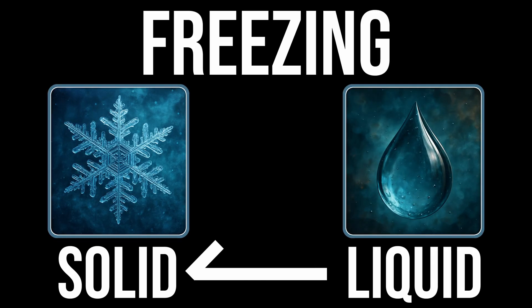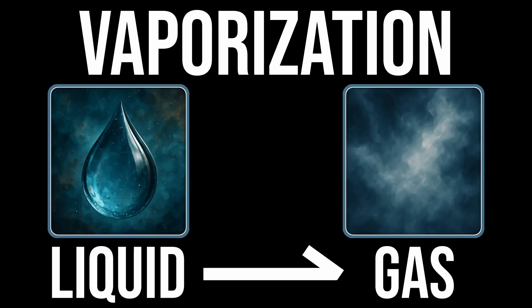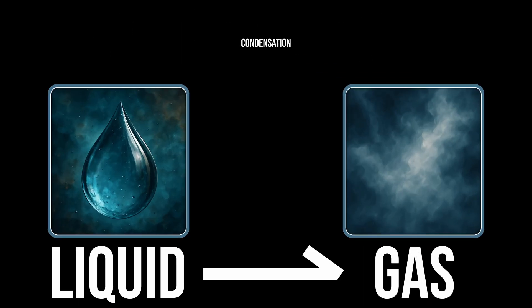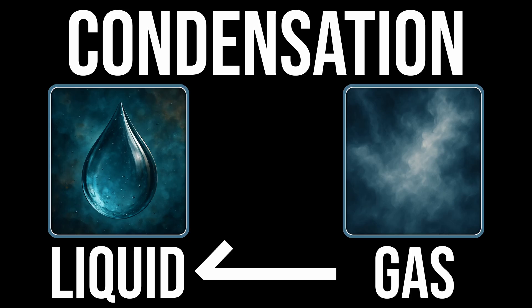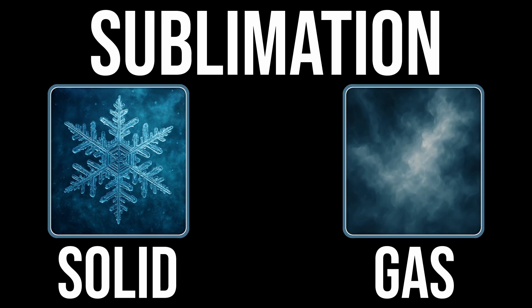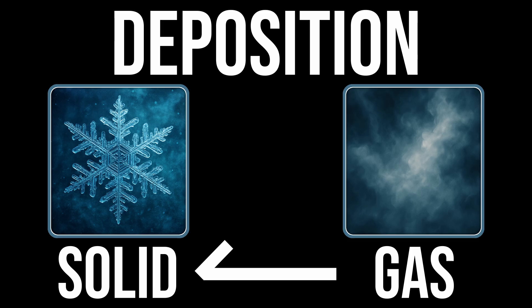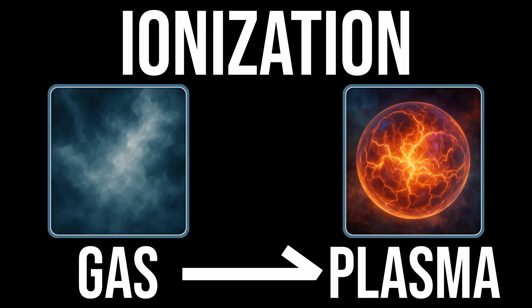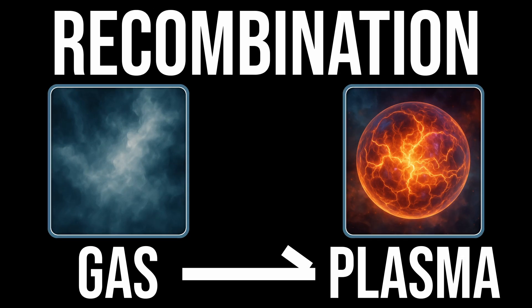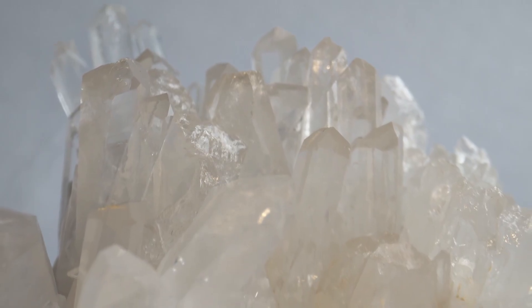Freezing: liquid to solid, crystals grow. Vaporization: liquid to gas, boil or slow. Condensation: gas to liquid, droplets show. Sublimation: solid to gas, straight go. Deposition: gas to solid, frost like snow. Ionization: gas to plasma, charges glow. Recombination: plasma to gas, free charge flow.